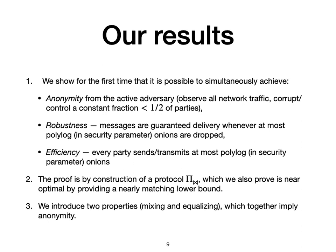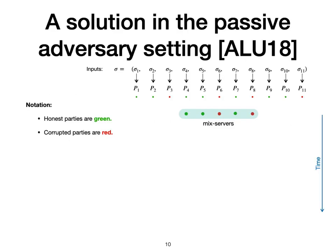In this paper, we show for the first time that it is possible to simultaneously achieve anonymity, robustness, and efficiency. The proof is by construction of the protocol, which we call Pi Butterfly. We also prove that this protocol is near optimal by providing a nearly matching lower bound. In order to prove that Pi Butterfly is anonymous rigorously, we formally introduce two properties called mixing and equalizing, which we prove by reduction imply anonymity. Let's first consider a solution that works in an easier setting: the passive adversary setting.